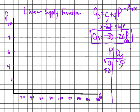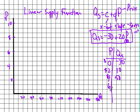The quantity supplied number will need to be positive for it to be meaningful. At a price of $2: 20 times 2 is 40, minus 30 gives us 10. So at $2, quantity supplied is 10 units. At $4: 20 times 4 is 80, plus negative 30 gives us 50.